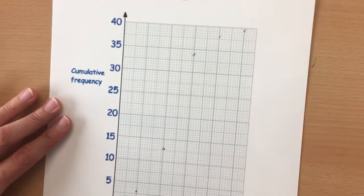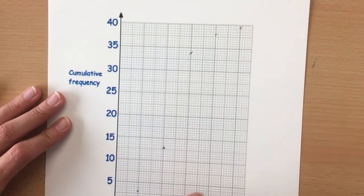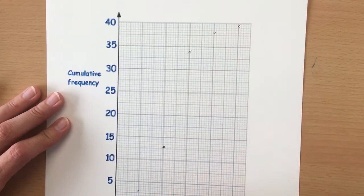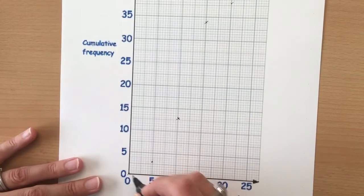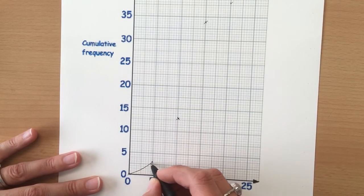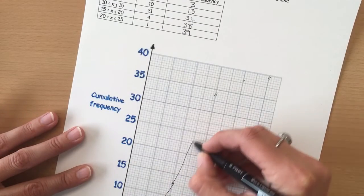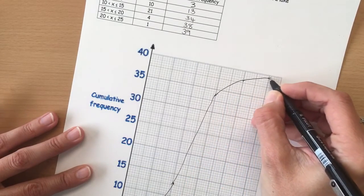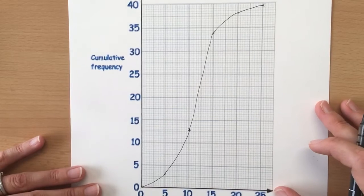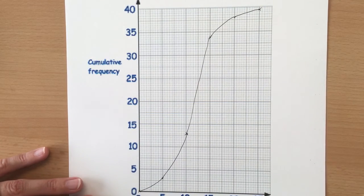Now we don't join this with a straight line, we have to put a smooth curve through them. So starting from the first point, we're going to put a smooth curve through the points and that is our cumulative frequency graph.